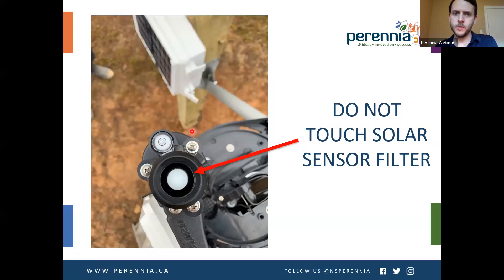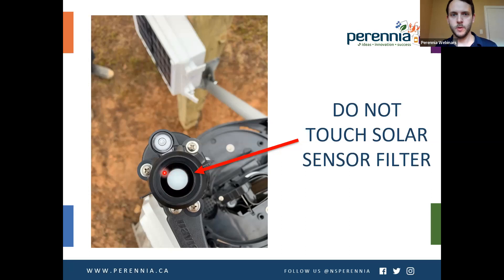One important maintenance note: when working around the weather station, do not touch the white part on the solar radiation sensor. This is a filter that ensures measurement accuracy. Touching it with your hands could leave oil or dirt that would foul the filter.